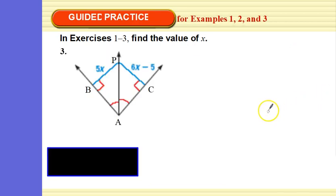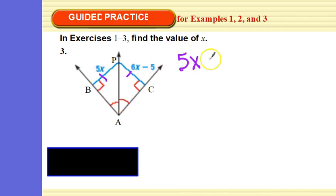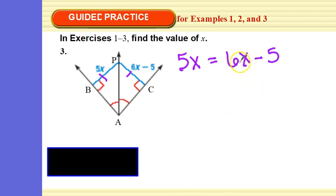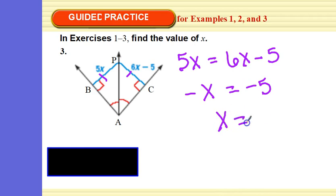Try another one. This is an angle bisector, therefore these are congruent. Set them equal and solve. If you subtract 6x from both sides, you get negative x, so negative x equals negative 5. Divide by negative 1 on both sides — x is 5.